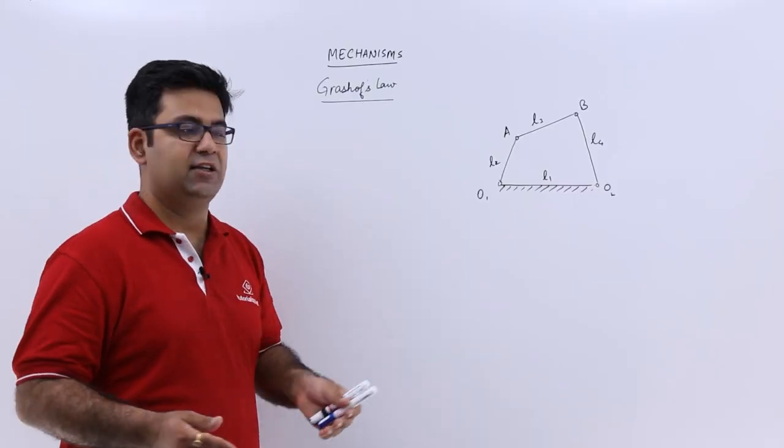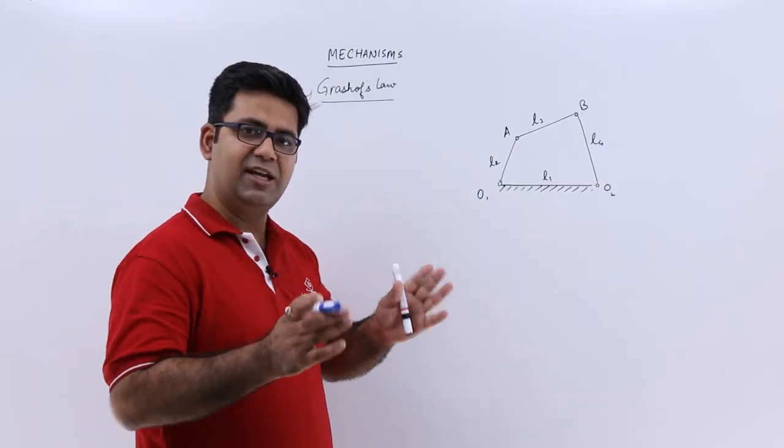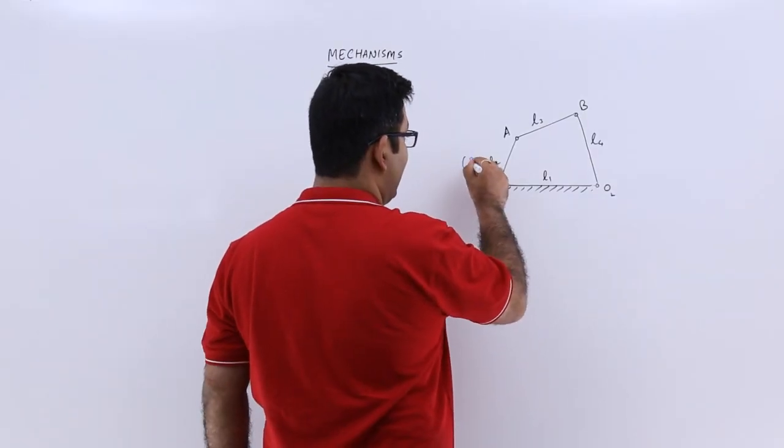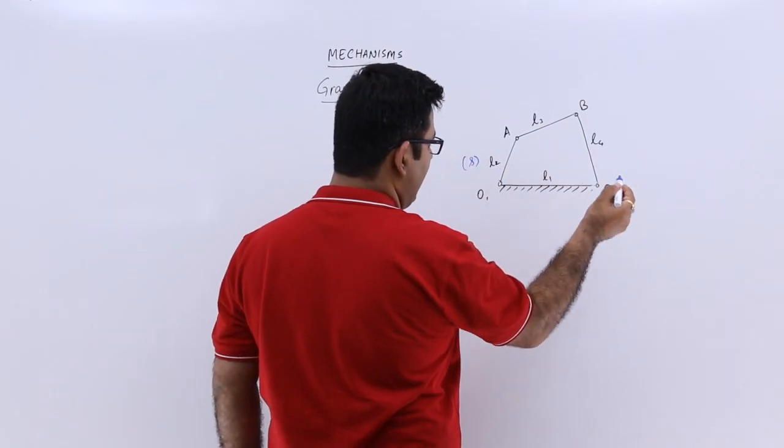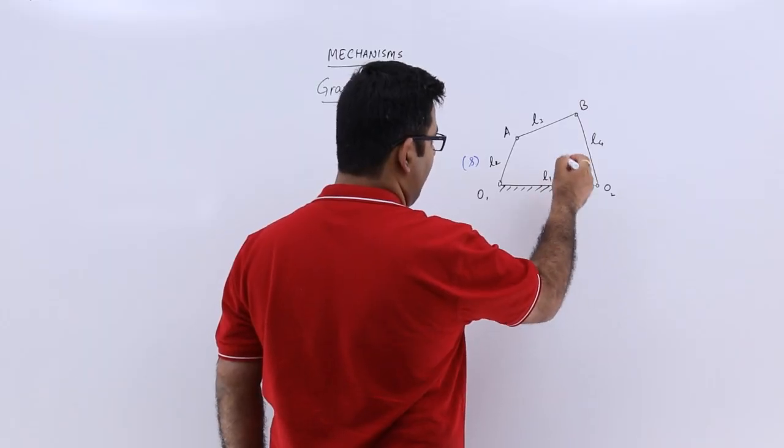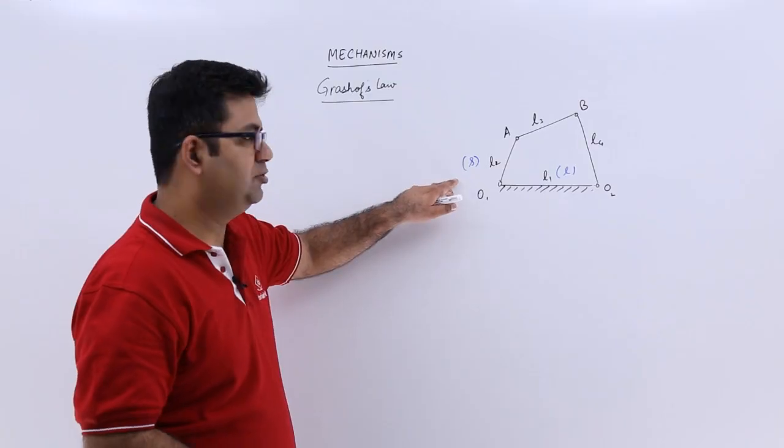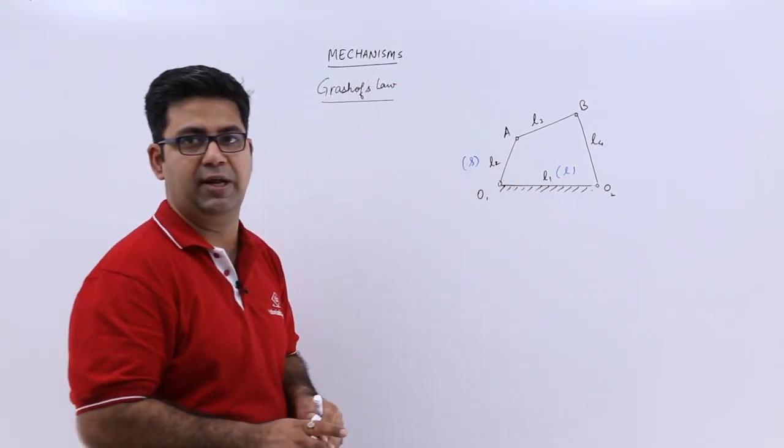Let us say that the smallest link has a length of s and the largest link has a length of l. So s corresponds to the smallest link and l corresponds to the largest link.